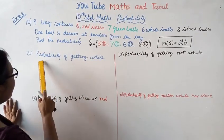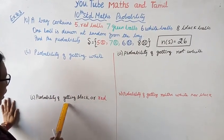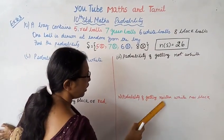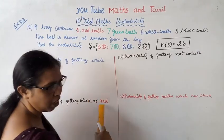One ball is drawn at random from the bag. Find the probability of getting white, getting black or red, not white, neither white nor black. That is 4 questions.